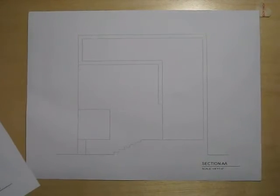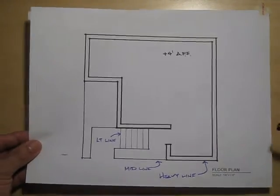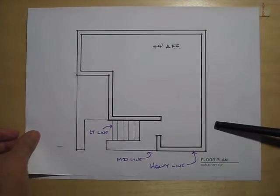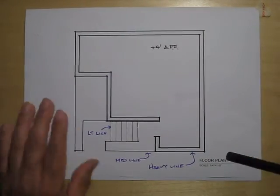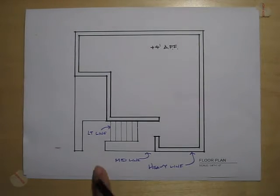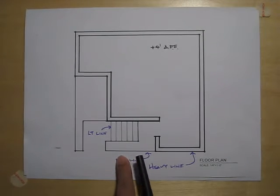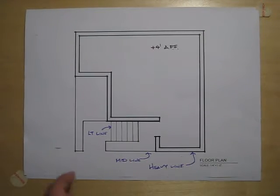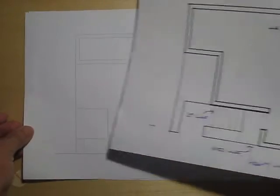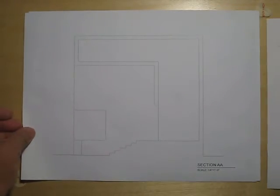Okay, just as we did with the floor plans where we figured out which line work was closest to you and which part was furthest away to determine what the light lines were, what the mid-weight lines are, and what the heavy lines were, that too applies to your section drawing as well.